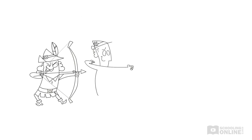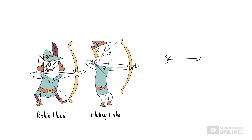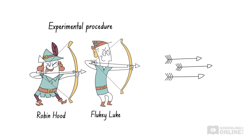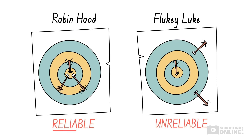This works the same way as reliability in science. The archers represent the experimental procedure that we performed, while the arrows in the target represent the experimental data we obtained. If the experimental procedure is reliable, like Robin Hood, then the results will be close to each other. However, if the experiment is unreliable, like Fluky Luke, then the results will be all over the place.